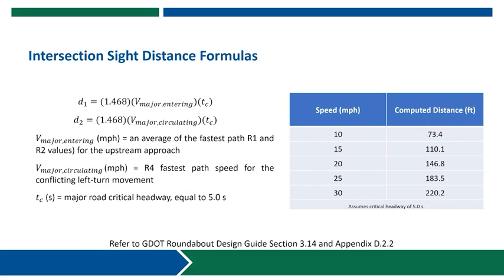These formulas result in the computed distances shown in the table. For a 15 mile per hour speed, roughly representative of your circulating speed that you might use for D2, you would have a computed distance of approximately 110 feet. Double that speed and you get double the computed distance, closer to 220 feet. This helps reinforce another reason why we want slower speeds and speed management through the intersection — not only for operations and safety, but also to make sure vehicles can adequately see conflicting vehicles and provide appropriate intersection sight distance without requiring large swaths of the corners to remain clear.